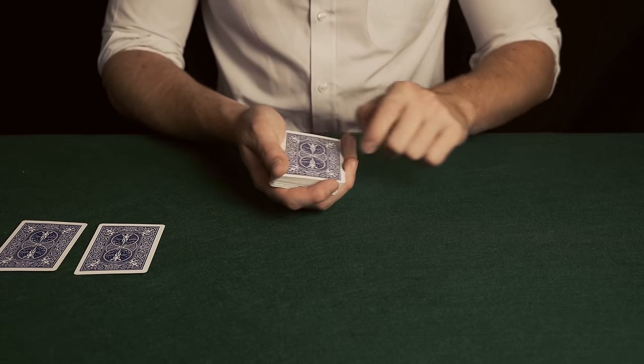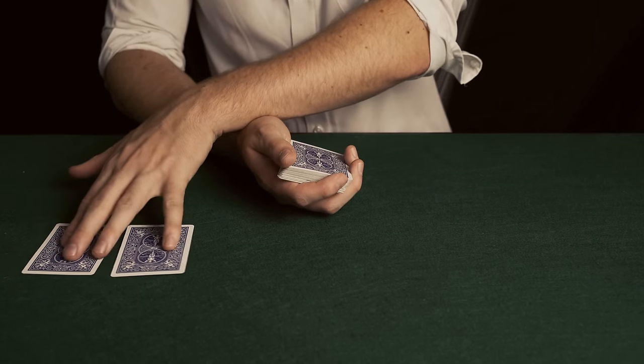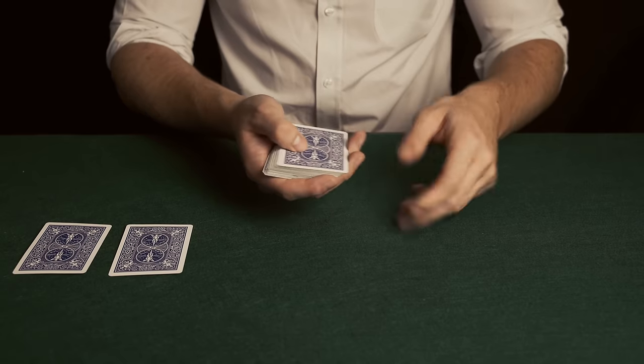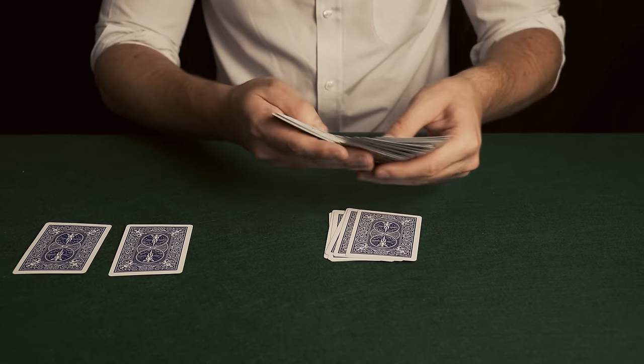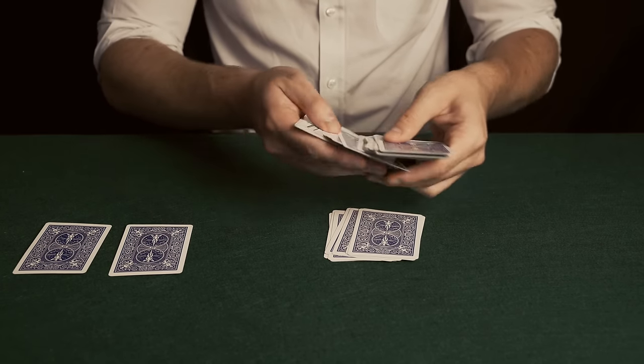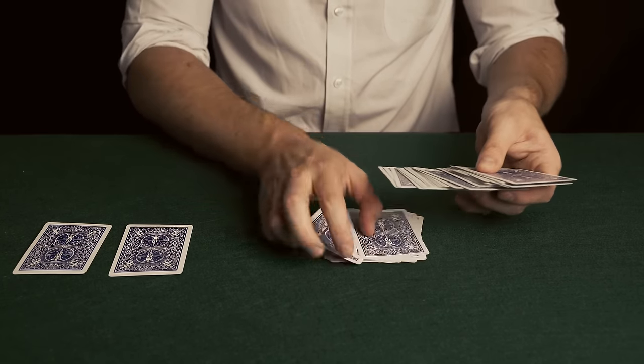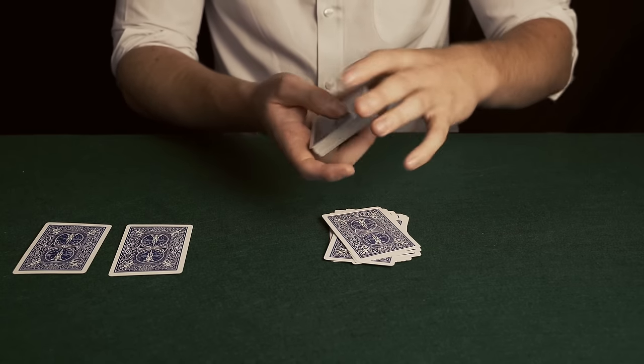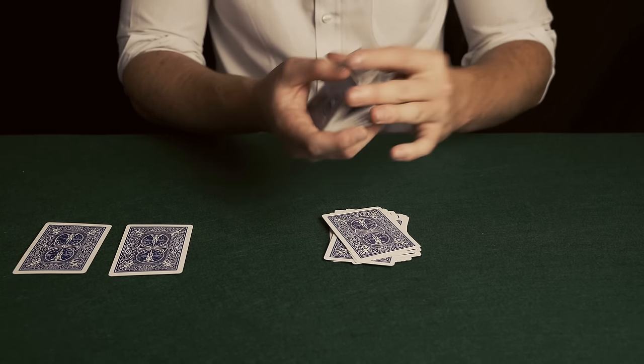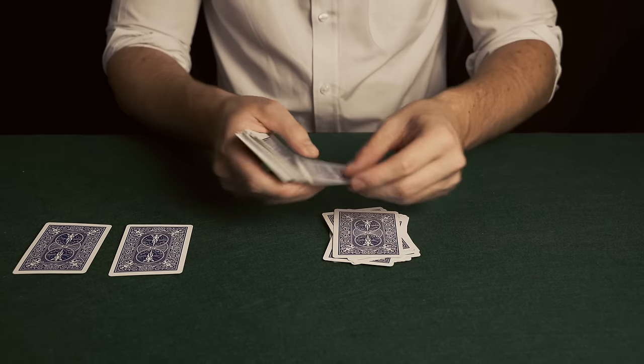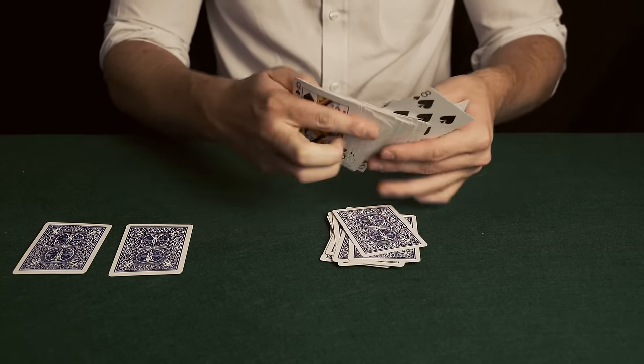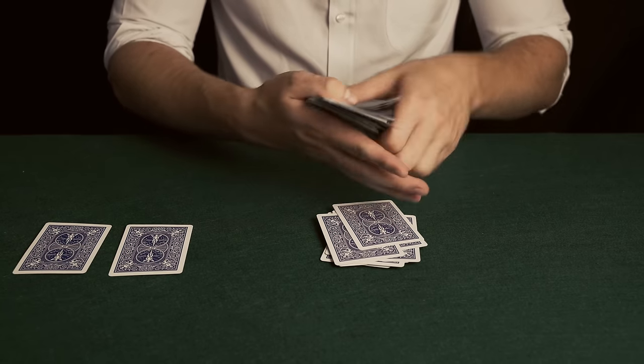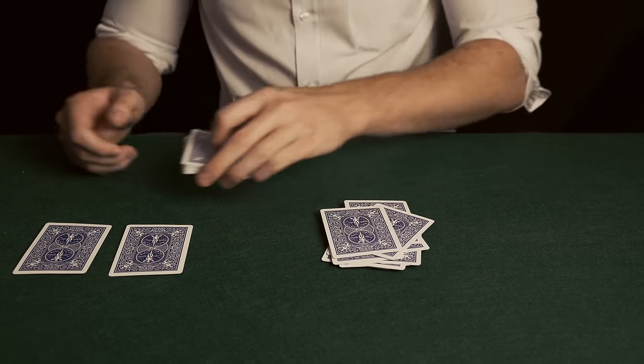Derren then picked up the shuffled cards and the magician told him to deal down any number of cards into a new pile. These cards could come from the top, middle, or bottom of the deck. It really didn't matter. Derren could even shuffle the cards in his hand. This meant that there were a random number of cards in a new pile and the magician had no control over what these cards were.